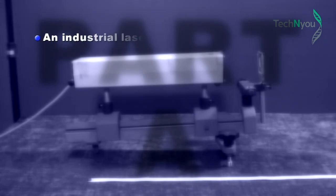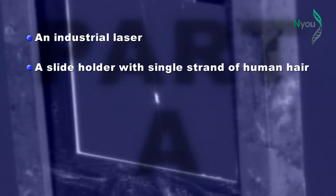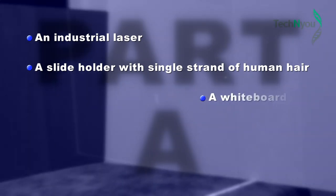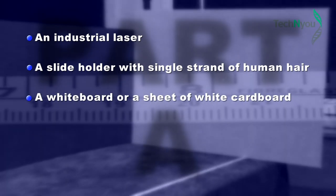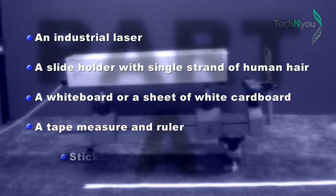The equipment required for Part A: an industrial laser, a slide holder with a single strand of human hair, a white board or a sheet of white cardboard, a tape measure and a ruler, sticky tape.